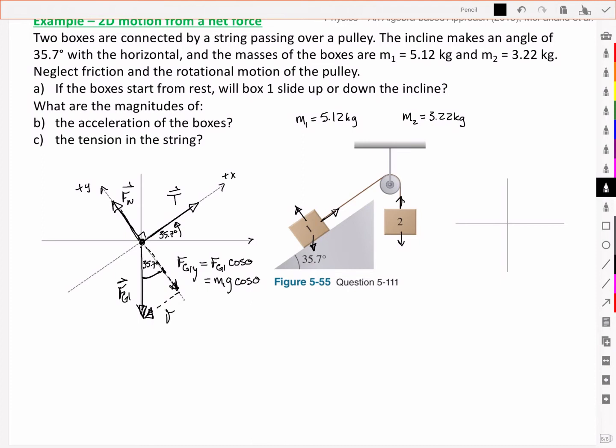And down here we have Fg1x, which is then Fg1 sin theta because it's opposite of the angle. So M1g sin theta. Let's stop for a minute though, because we want to get our signage in here. We've defined what the positive x-axis is. And so both the tension and the normal force are positive, but our gravity then is negative. And so we'll have a negative there as well.